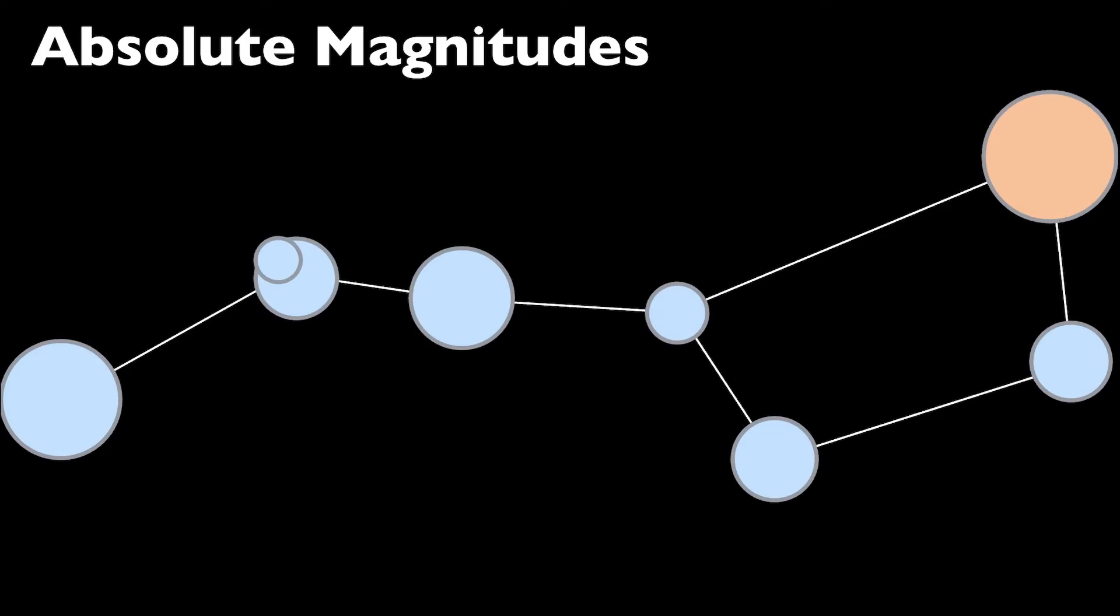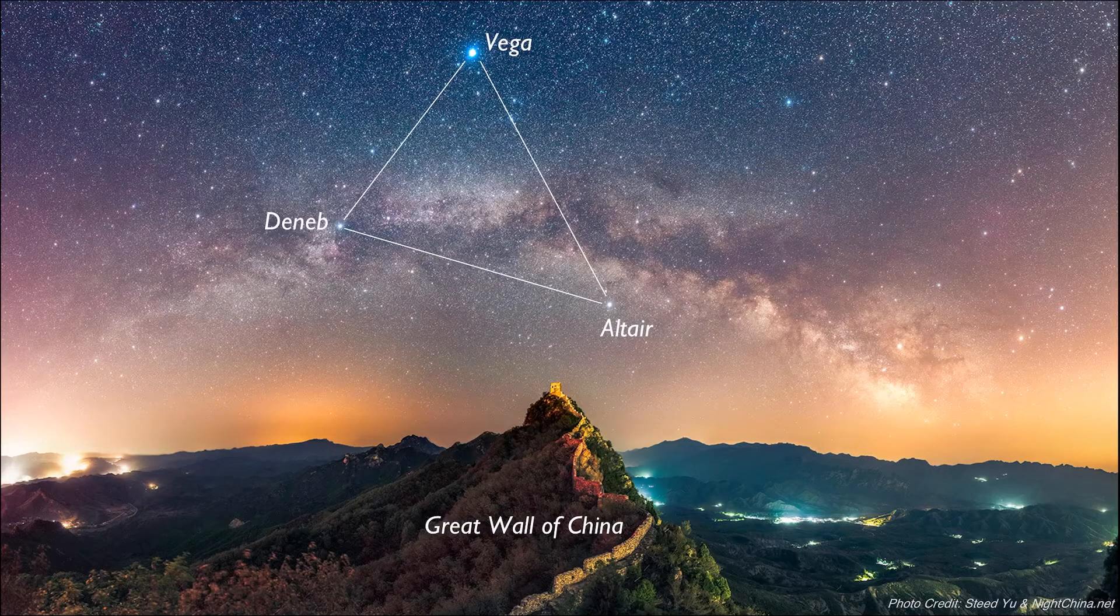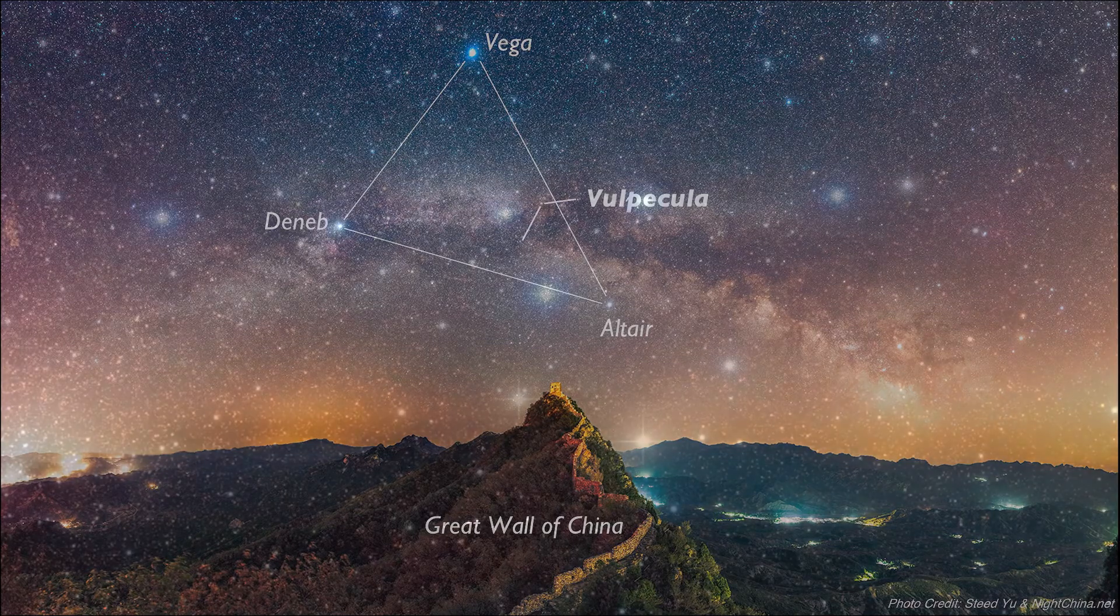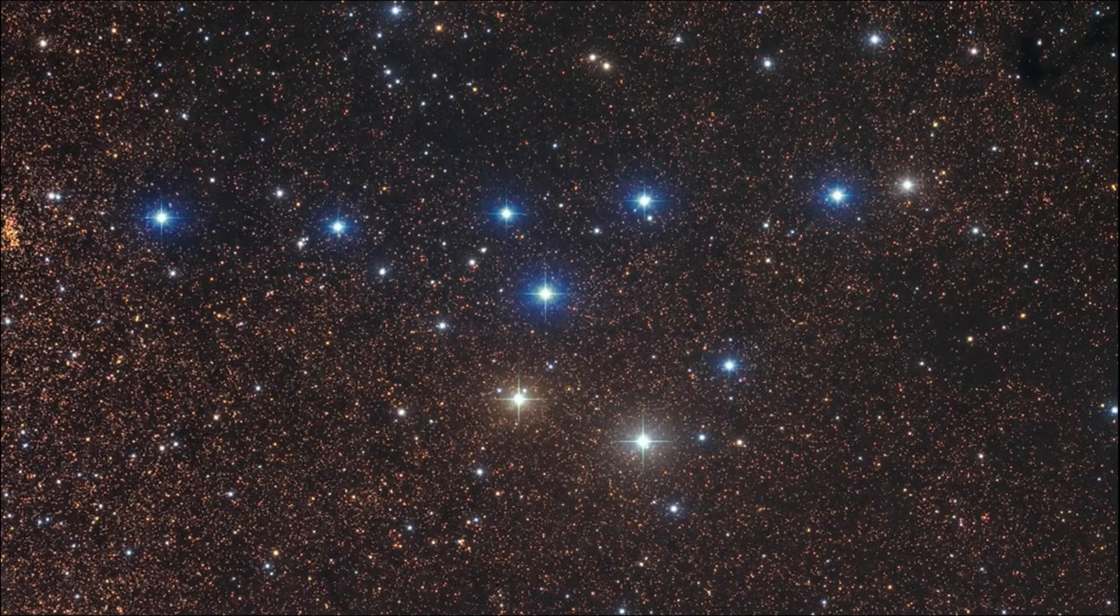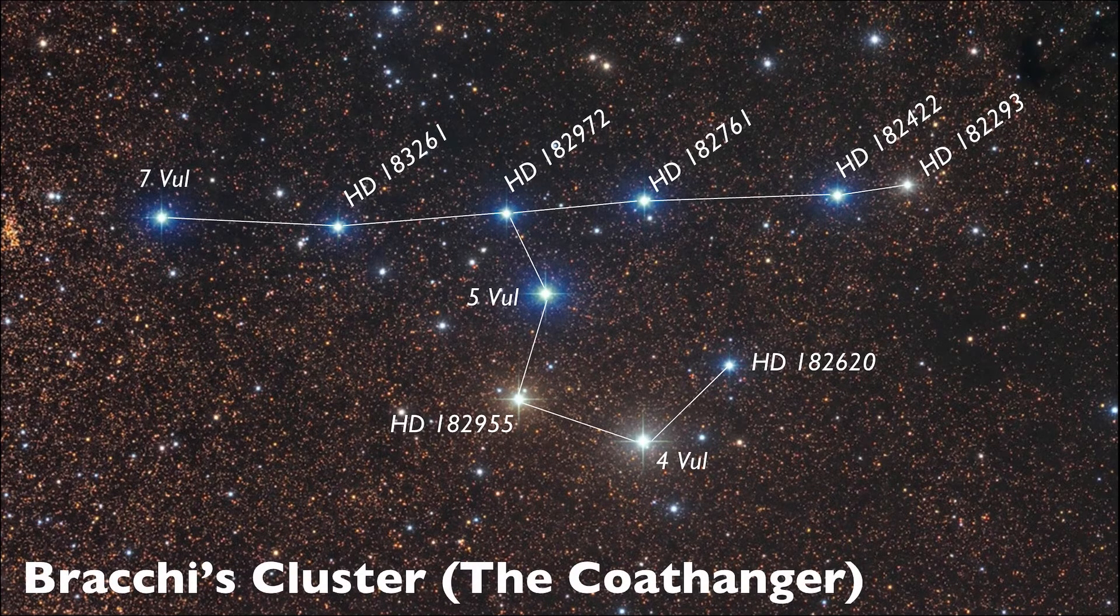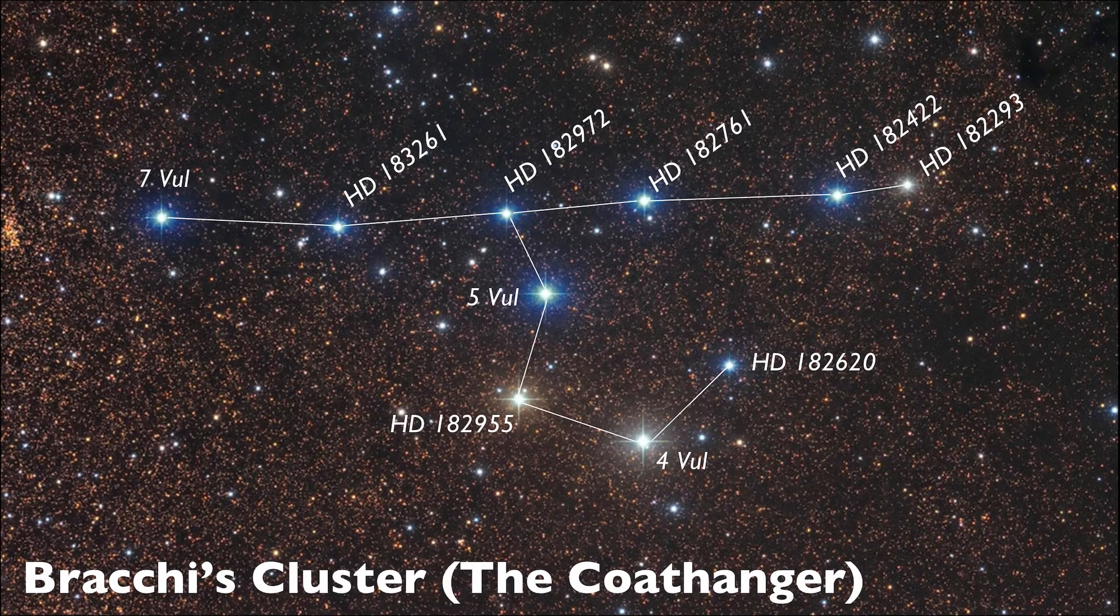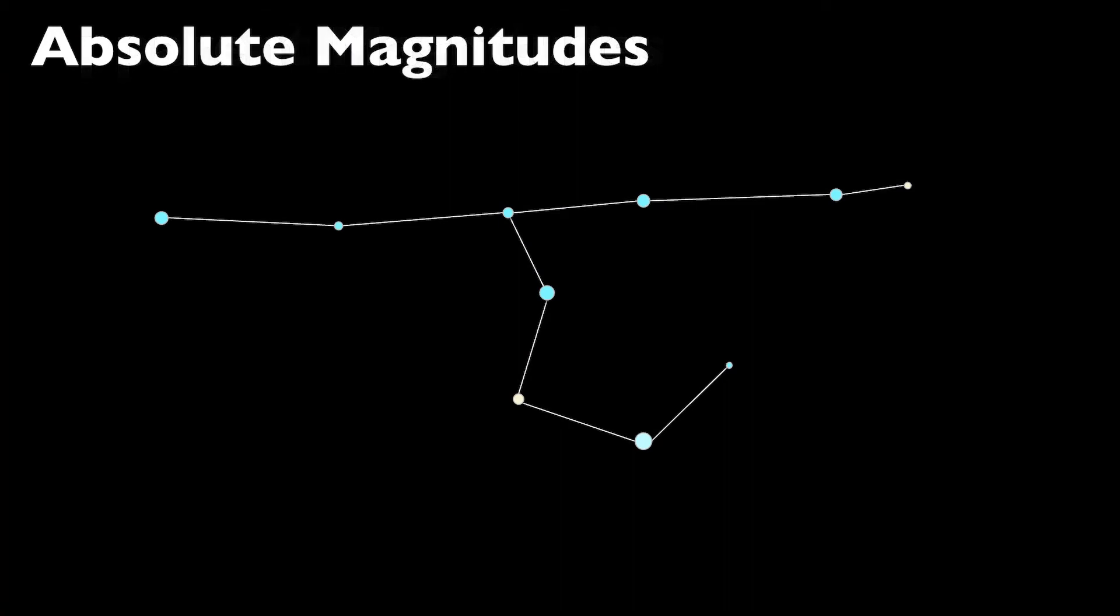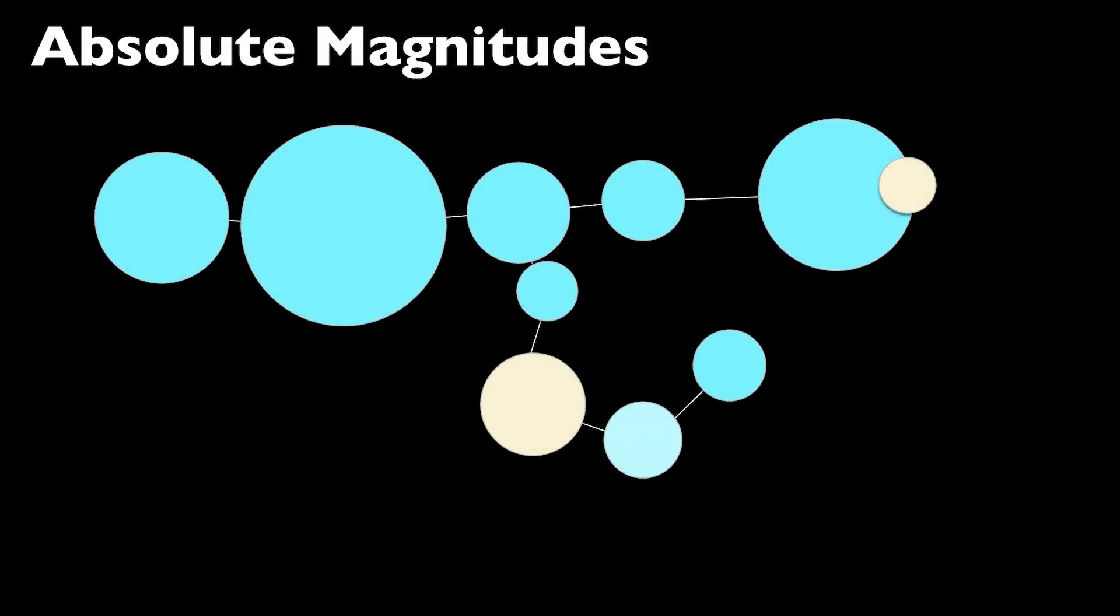Now if we revisit the Summer Triangle, but this time focus on an asterism in the constellation Vulpecula, we'll see a series of 10 relatively dim stars that can be connected to form the shape of a coat hanger, thus giving this asterism its very fitting name. These stars have such dim apparent magnitudes, anywhere between the 5th and 7th magnitudes, that it's incredible to think how far away they must all be if their magnitudes change to reflect the increase in brightness we would see if they were all brought closer to a distance of 10 parsecs from the Earth.